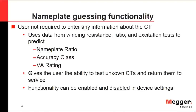One problem you may encounter is a CT in the field whose nameplate is not readable, and engineering drawings may also be unavailable. In this case, the MRCT's nameplate guessing functionality can predict the nameplate ratio, accuracy class, and VA rating from the test measurements.